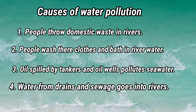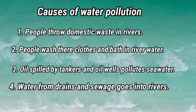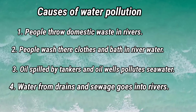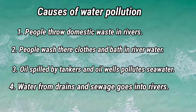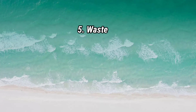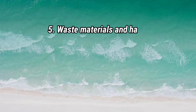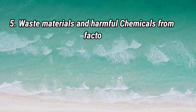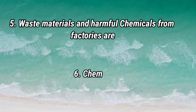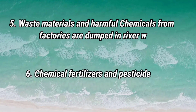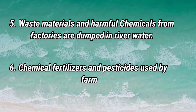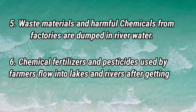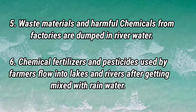Water from drains and sewage goes into rivers. Waste materials and harmful chemicals from factories are dumped in river water. Chemical fertilizers and pesticides used by farmers flow into lakes and rivers after getting mixed with rainwater.